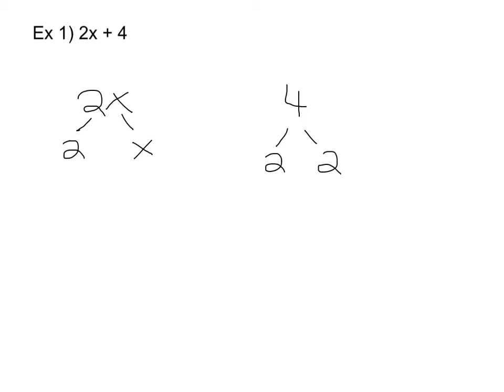The first step of factoring an algebraic expression mathematically is to find the prime factors of each of your terms. So let's start with our 2x. 2x factors into 2 times x. Those are both prime, so our prime factors are just 2 and x.